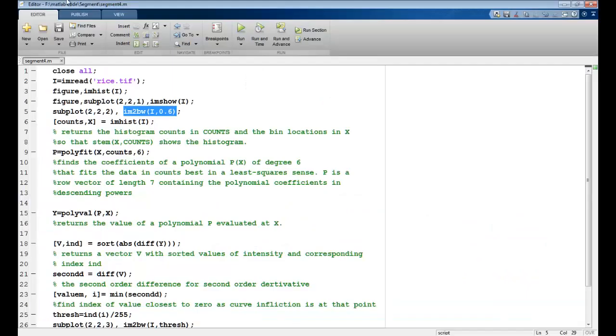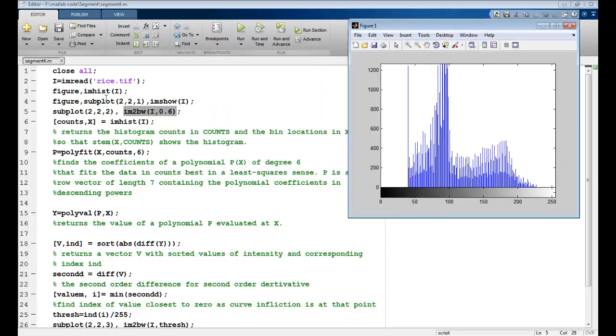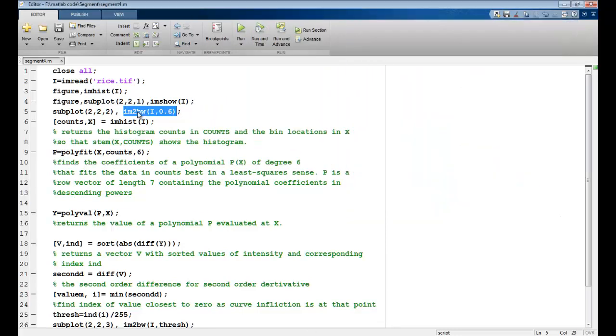So I have the code written with me. Now going through it line by line, we first read the image, plot the histogram, and here I have just used a heuristic thresholding like we saw in the last tutorial.